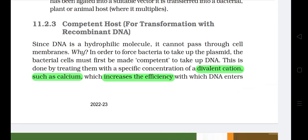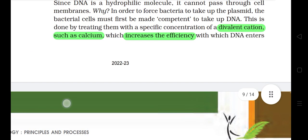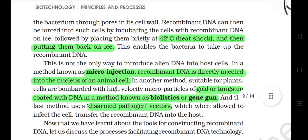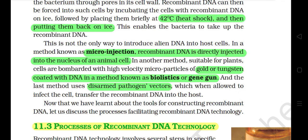11.2.3 Competent Host for Transformation with Recombinant DNA. Since DNA is a hydrophilic molecule, it cannot pass through the cell membrane. In order to force bacteria to take up the plasmid, the bacterial cells must first be made competent to take up DNA. This is done by treating them with a specific concentration of a divalent cation such as calcium, which increases the efficiency with which DNA enters the bacterium through pores in its cell wall. Recombinant DNA can then be forced into such cells by incubating the cells with recombinant DNA on ice, followed by placing them briefly at 42 degrees Celsius (heat shock) and then putting them back on ice. This enables the bacteria to take up the recombinant DNA.